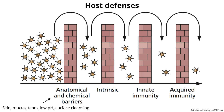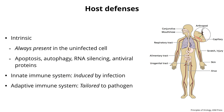Today I want to talk about intrinsic and innate immunity, the next two barriers viruses have to overcome. Intrinsic immunity is a defense that's always present in the uninfected cell—it typically doesn't have to be induced. Intrinsic defenses are always present and ready to take care of viruses when they come in. They include things like apoptosis, autophagy, RNA silencing, and other antiviral proteins.